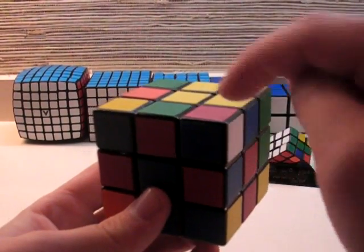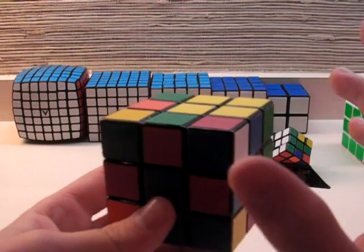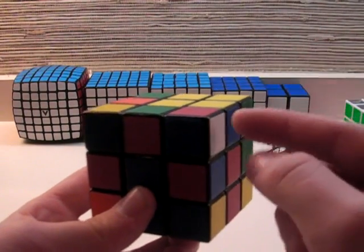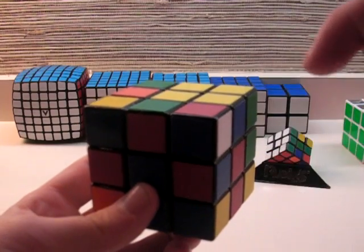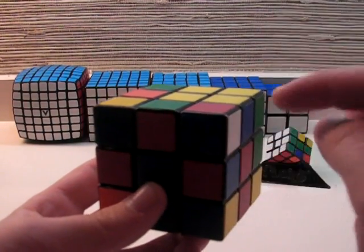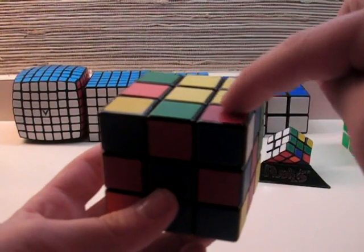With that first case, with white on the top, no matter what you do, as long as you do that three-step algorithm, the white will go from on the top to on the right. And all you'll need to do is a U2 to bring it from here up to the front here.